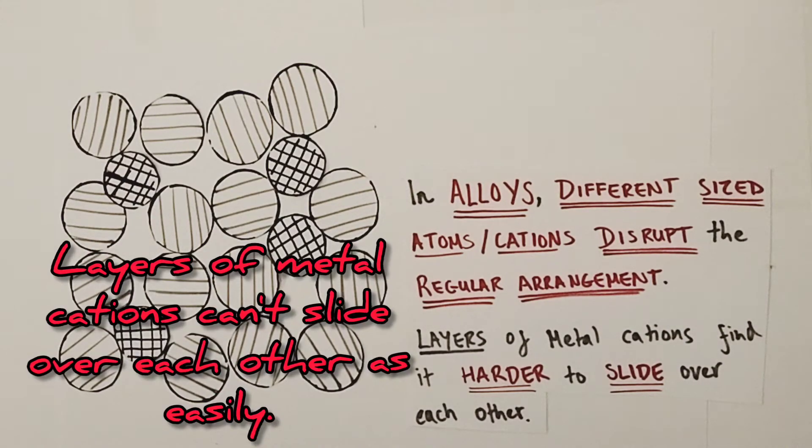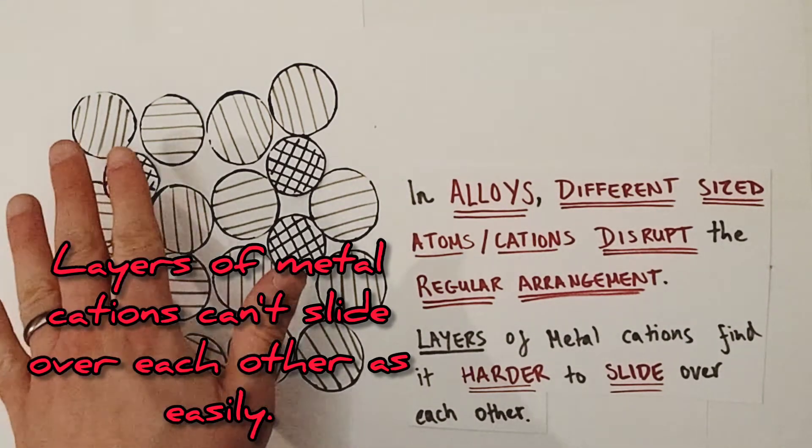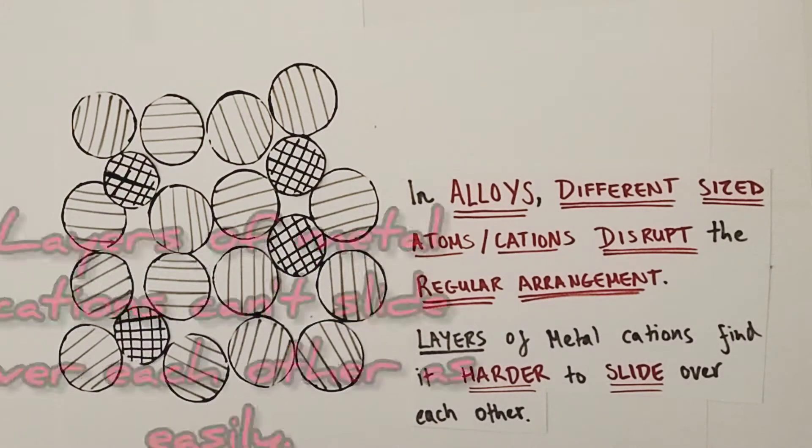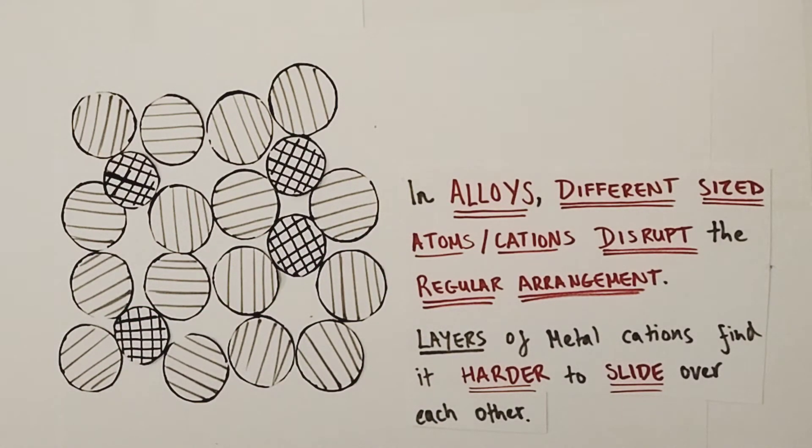The layers of metal cations will find it much harder to slide over each other easily, and that will create a harder and more rigid structure.